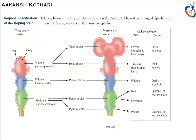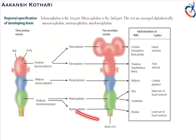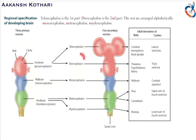The cavity of the metencephalon forms the upper part of the fourth ventricle, whereas the myelencephalon forms the lower part of the fourth ventricle. Please remember that the telencephalon is the first structure to develop, followed by the diencephalon, then the mesencephalon, followed by the metencephalon and myelencephalon.